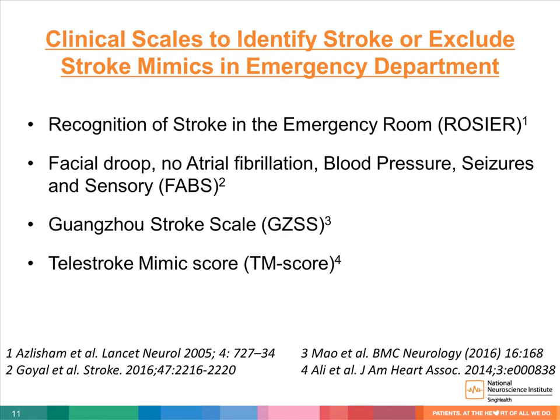These include the FAB-S score — comprising facial droop, no atrial fibrillation, normal blood pressure, presence of seizures, and isolated sensory finding — and the Guangzhou stroke scale, which was developed from Chinese patients for the purpose of excluding stroke mimics. However, applying all these scores may be difficult, as many clinical parameters are required and they may not be practical in real-world settings. Additionally, these scales have not been reliably validated across different communities.